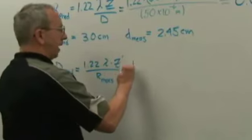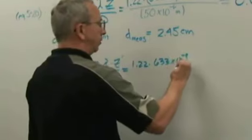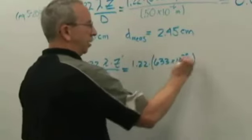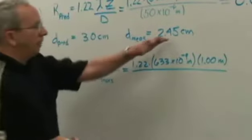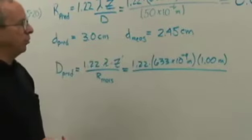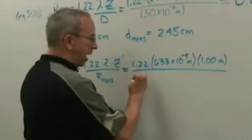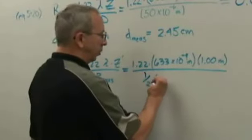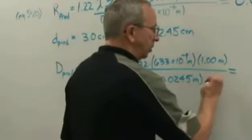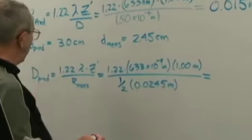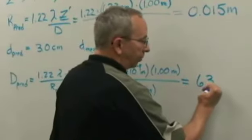We'll say the measured value. And if we substitute in our values of 1.22 times 633 times 10 to the minus 9 meters, and our screen distance was 1.00 meters, and we measured 2.45 centimeters or 0.0245 meters, or since we want half of that, we'll say 0.5 times 0.0245 meters. And if you calculate that out, you'll get that the predicted value for our diameter of our pinhole is 63.0 microns.